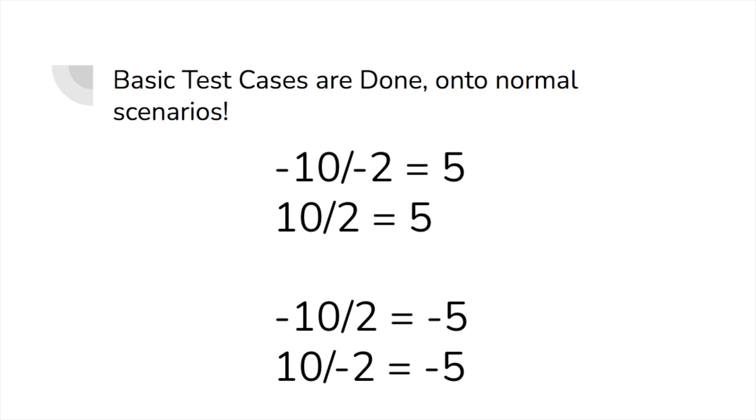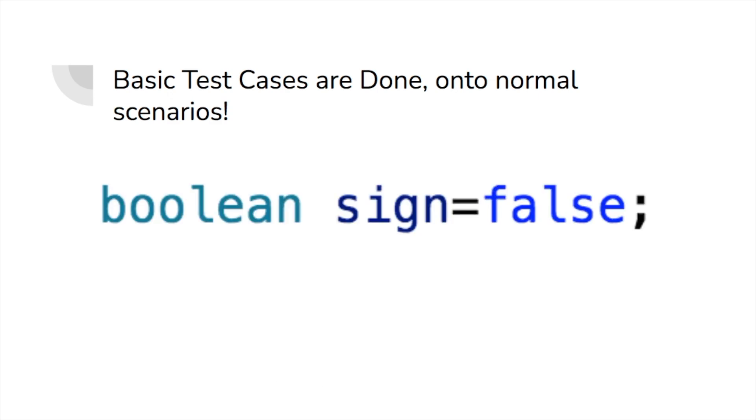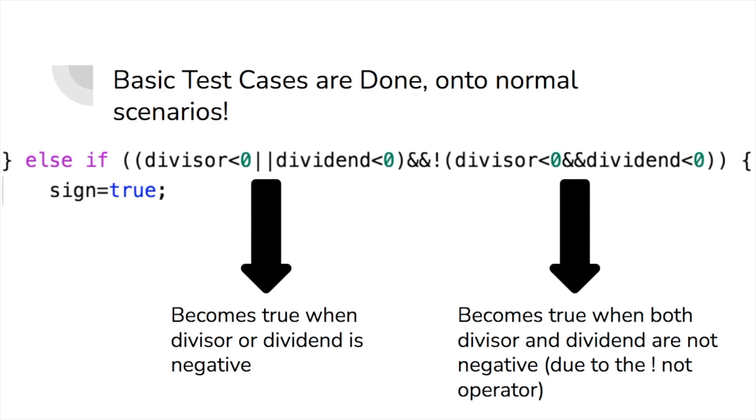We need to be able to find out when we should be making our quotient negative, and to do this we can use another boolean variable which I'll be calling sign. What we'll be doing with this variable is assigning it a value of true whenever the divisor or dividend is negative, but we cannot assign it when both the divisor and dividend are negative. If we did, then we might return a negative quotient when it should be a positive quotient. To ensure that we don't do this, we should add the basic OR operator, but we should also add a separate statement that says that both should not be negative.